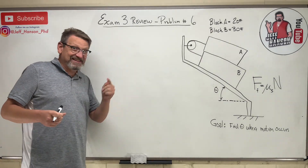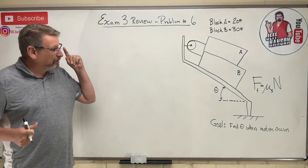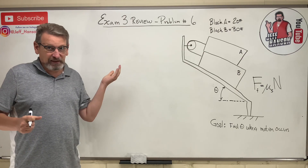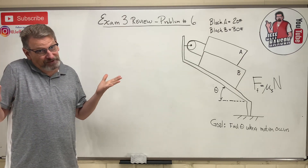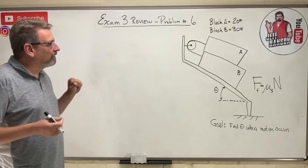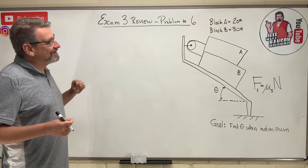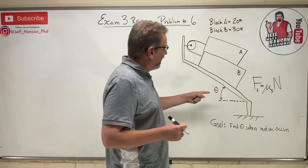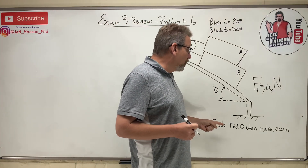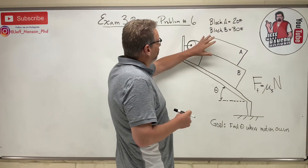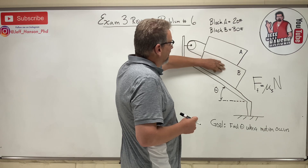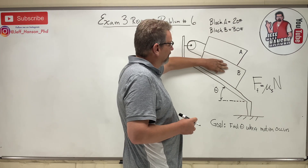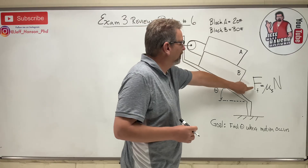All right friends, we're back. We're talking exam three, we're on problem number six. So this looks like a simple friction problem — they ask us to find the value of theta, this angle here where motion occurs. I've got block A here and block B here, and block B is heavier than block A. This is what we call a simple friction problem.